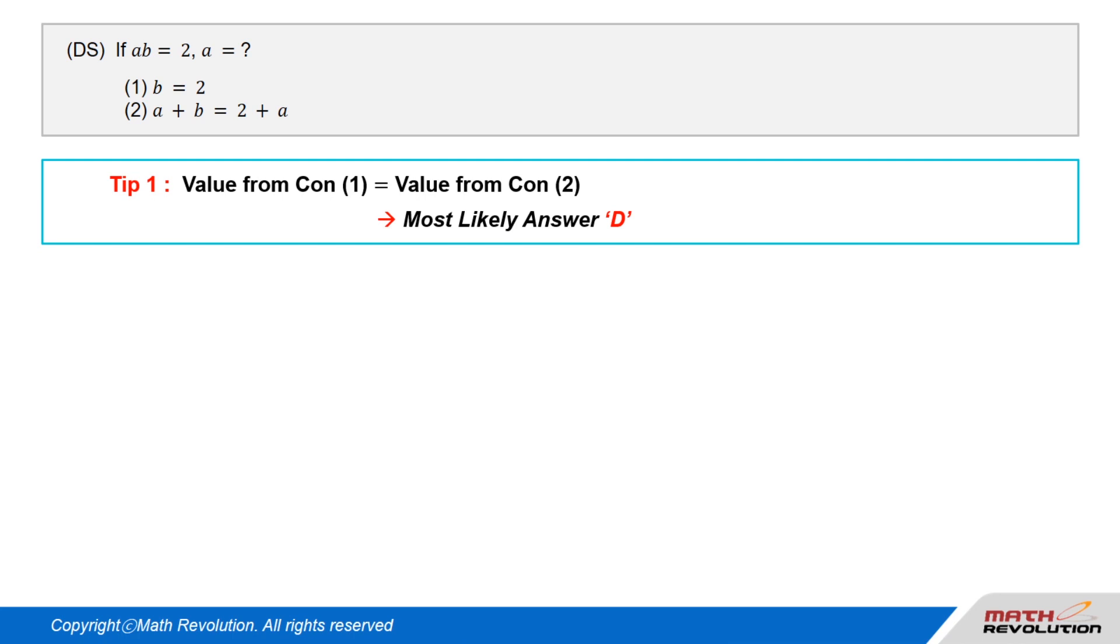Solution. Now we will solve this DS question using the variable approach. Tip 1: When the value from Condition 1 and the value from Condition 2 are the same, D would be the most likely answer. Wow, this is very important. You should definitely memorize it.